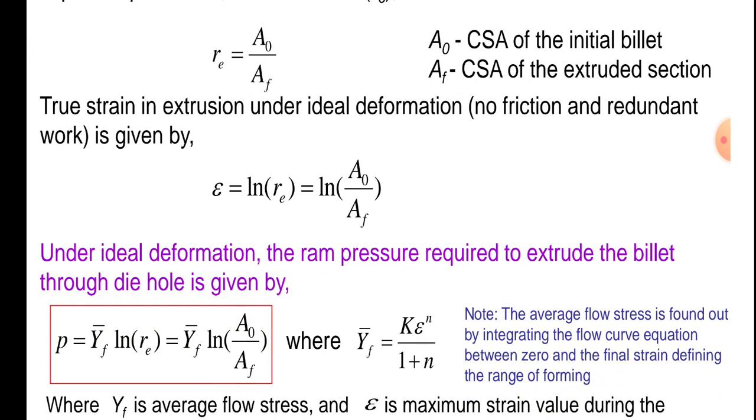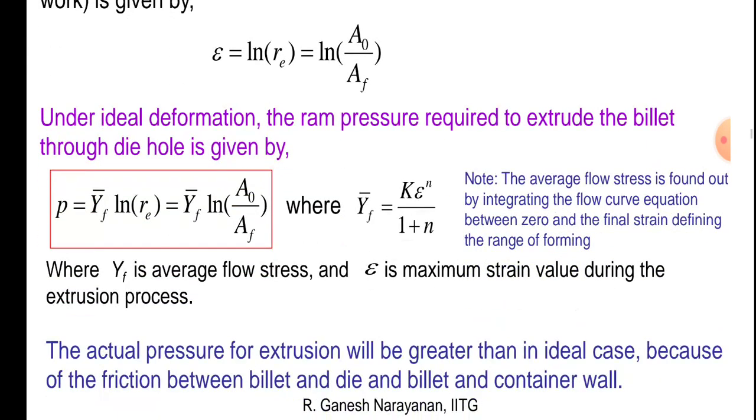Under ideal deformation, the RAM pressure required to extrude the billet through die hole is given by P equals Y̅f log to the base 10 of Re, equals Y̅f log to the base 10 into bracket A0 by Af.